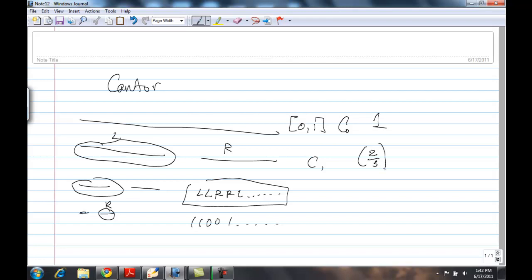The length here is 2 thirds. The length at the kth step is 2 thirds to the k. And since this goes to 0 as k goes to infinity, and the Cantor set is contained in all of these, then the measure of the Cantor set is going to be 0.